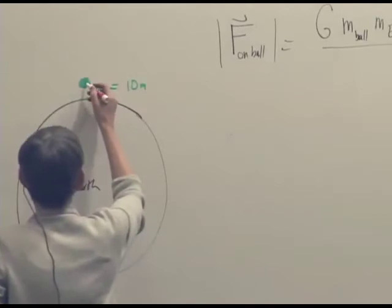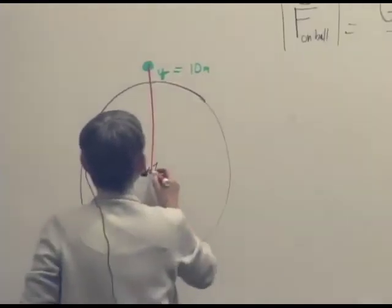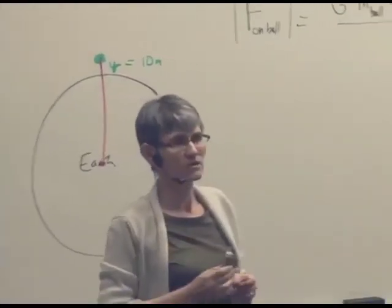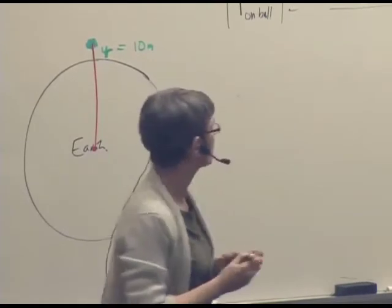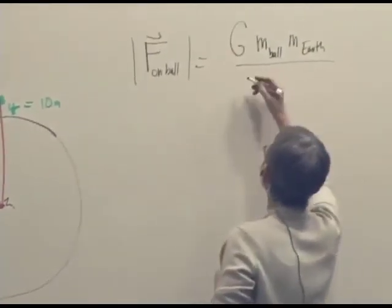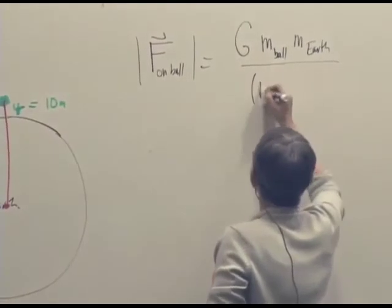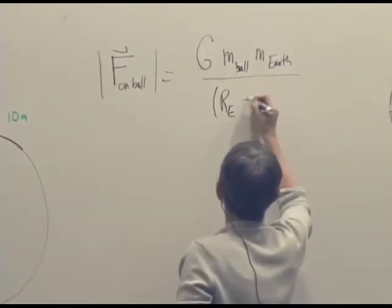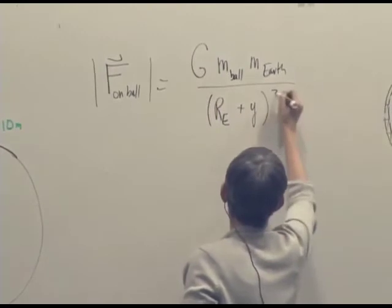And so, in fact, the distance we're interested in for the gravitational interaction is indeed, as you say, the distance to the center of the Earth. So that would be the radius of the Earth plus Y squared.